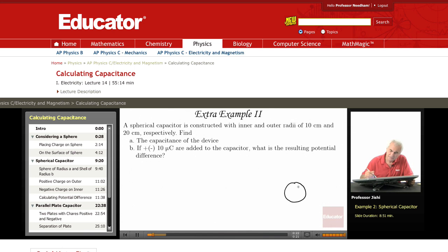We have a conducting sphere of radius 10 centimeters, or 0.1 meters, which we'll call A. And we have a conducting shell of radius 20 centimeters, or 0.2 meters, which we call B. What is the capacitance of the device?